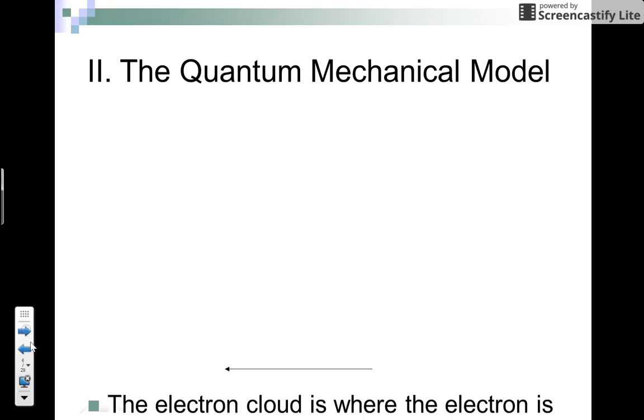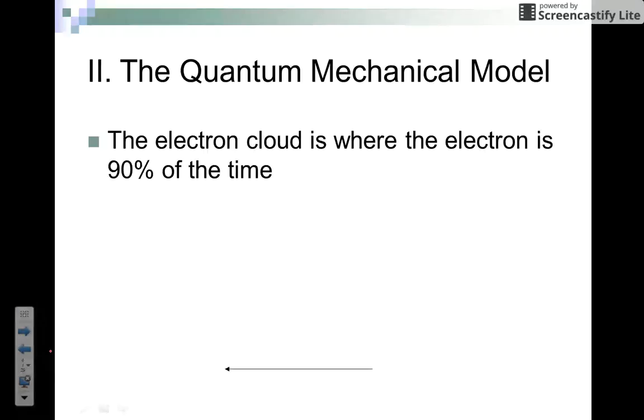The quantum mechanical model says the electron cloud of your atom is where the electron is 90% of the time. Scientists aren't sure where the electron is the other 10% of the time, but with 90% accuracy we can predict the location. As we more accurately pinpoint the location of the electron, we lose accuracy of the momentum—that's the Heisenberg uncertainty principle. As we become more certain about location, we're less certain about momentum.